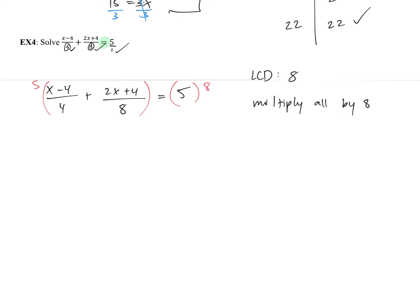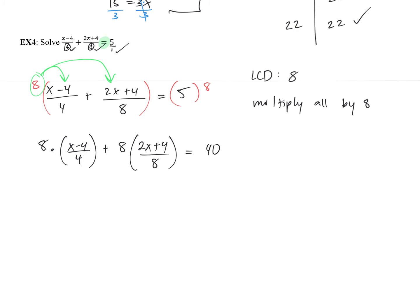Multiply both sides by 8, then distribute the 8 into each term: 8 times (x minus 4) over 4, plus 8 times (2x plus 4) over 8, equals 5 times 8. Simplifying: 4 goes into 8 twice and 8 goes into 8 once, giving 2 times (x minus 4) plus (2x plus 4) equals 40. Fractions are gone — and remember, we can only do this when we have an equation.